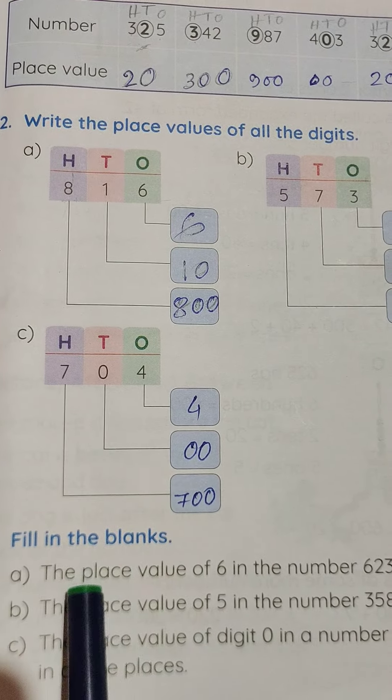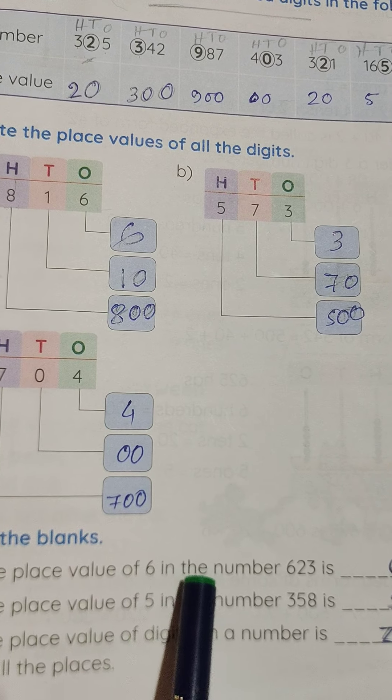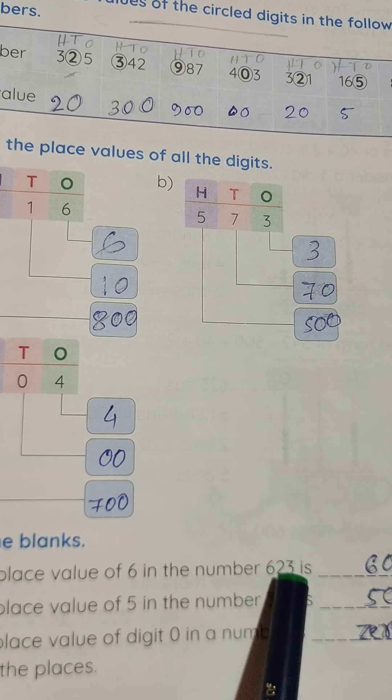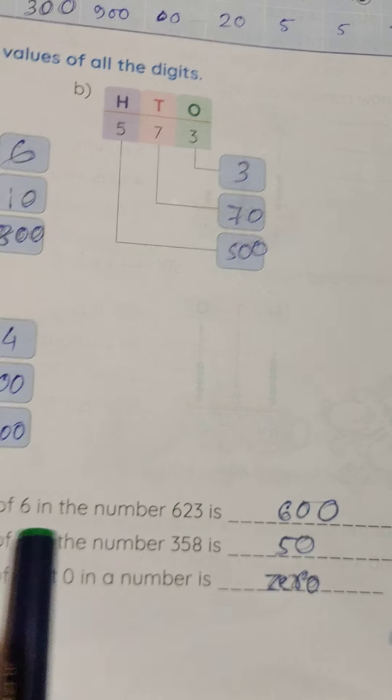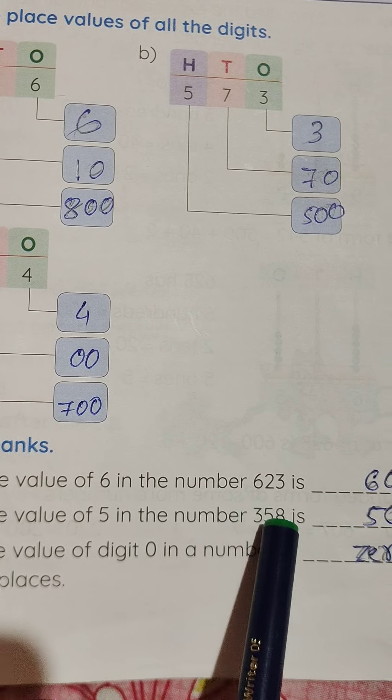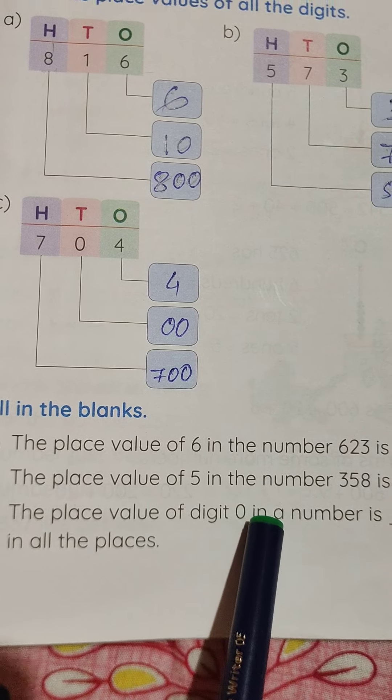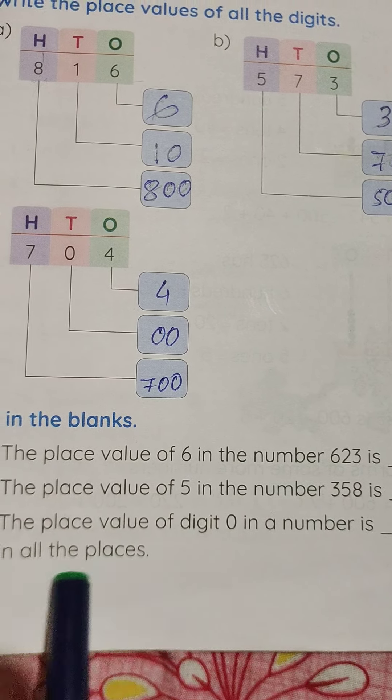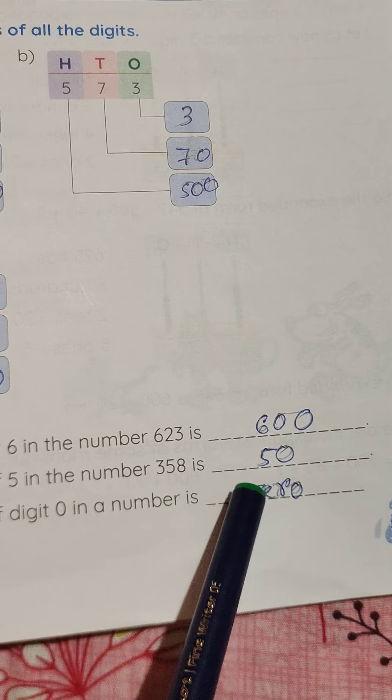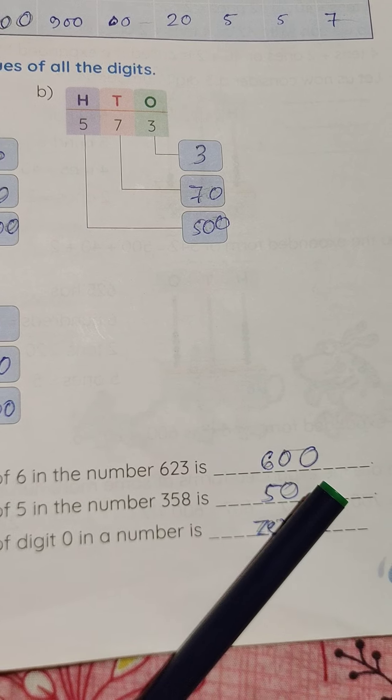Fill in the blanks. The place value of 6 in the number 623 is 600. The place value of 5 in the number 358 is 50. The place value of digit 0 in a number is 0. Turn over the page.